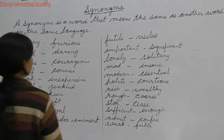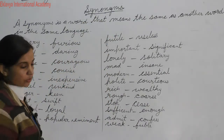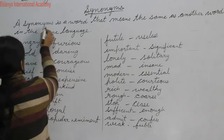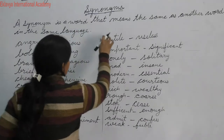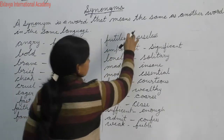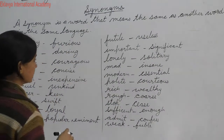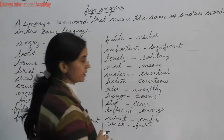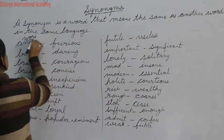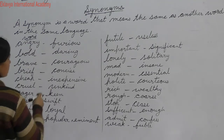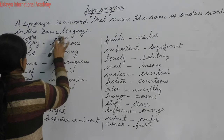First we will see the definition of synonyms. A synonym is a word that means the same as another word in the same language — iska same meaning hota hai. These words here are synonyms. You can see them on the board.